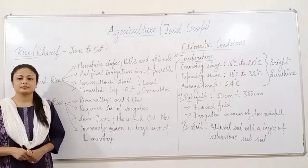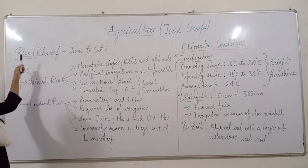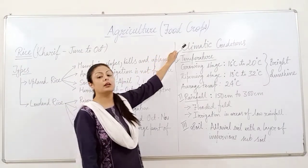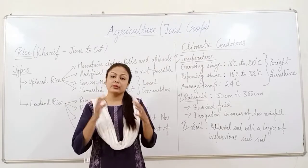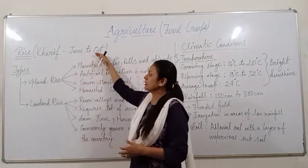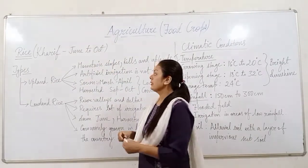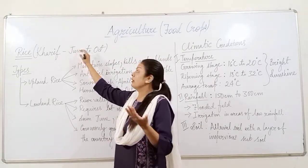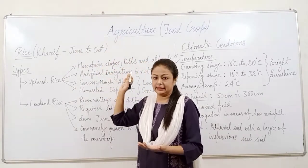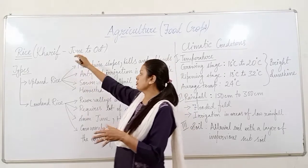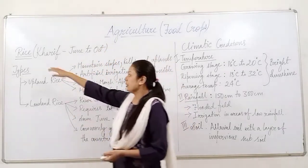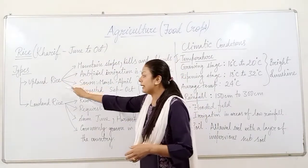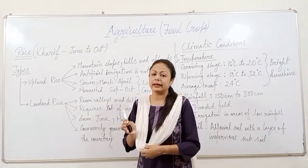Let's learn more about rice — specifically the types of rice grown in India and the climatic conditions required for its cultivation. Rice is a kharif crop, grown from June to October covering sowing and harvesting. There are two broader types of rice: upland rice and lowland rice, depending on the region where they grow. Upland rice grows in areas of higher altitude like mountain slopes, hills, and uplands.